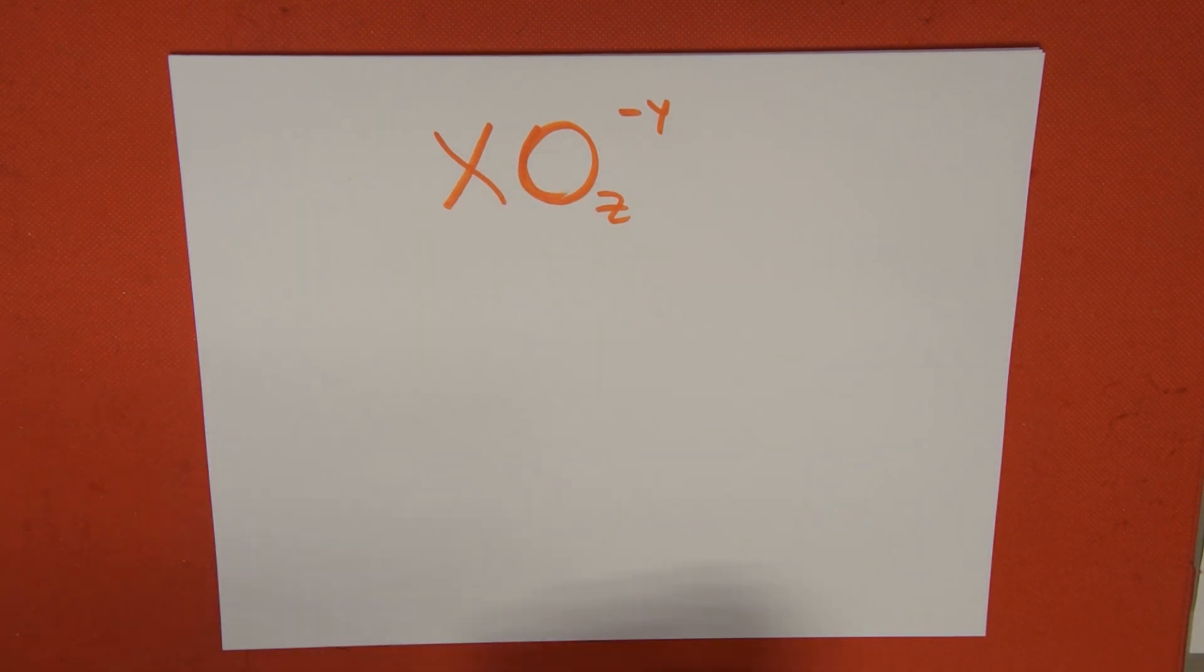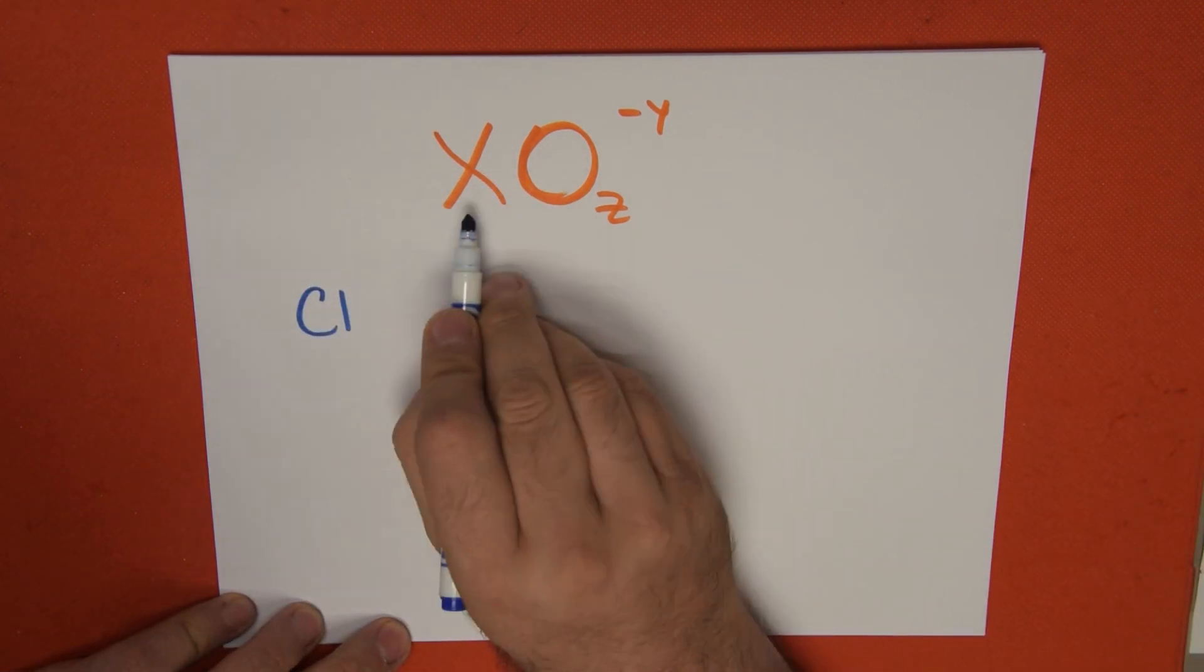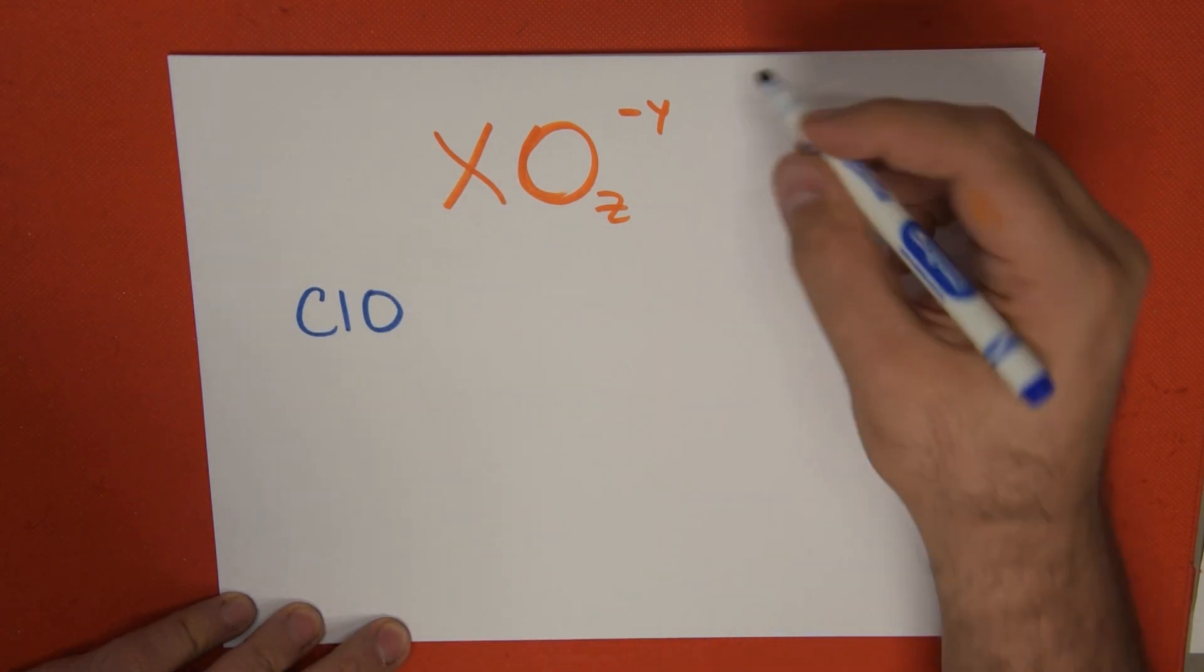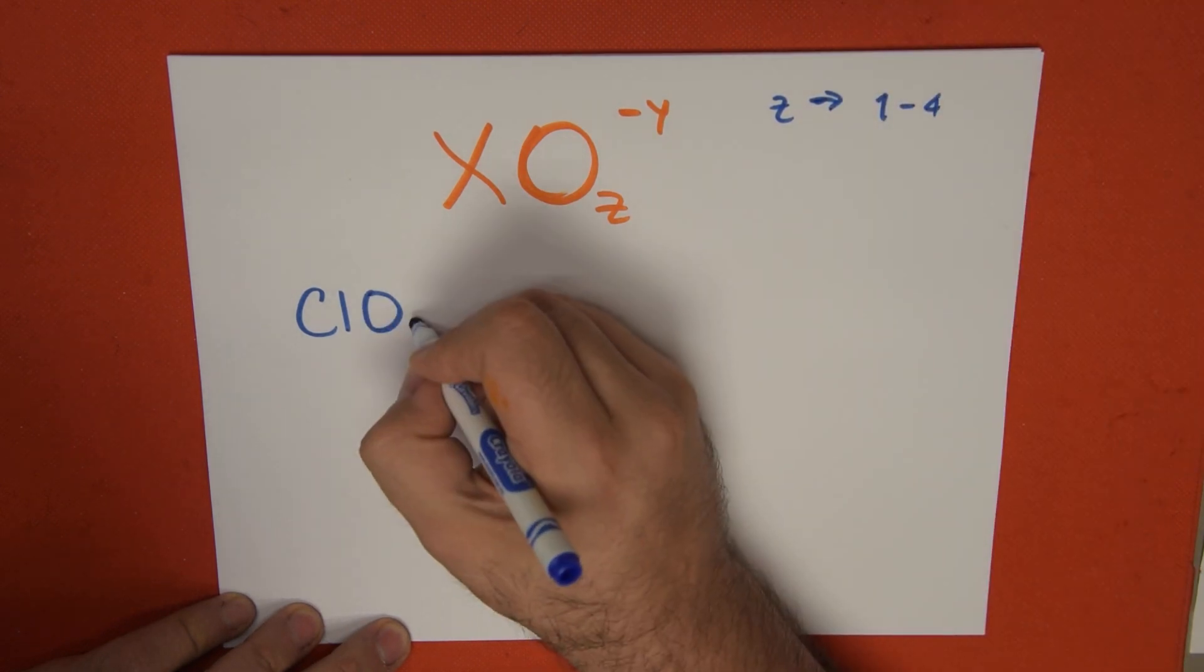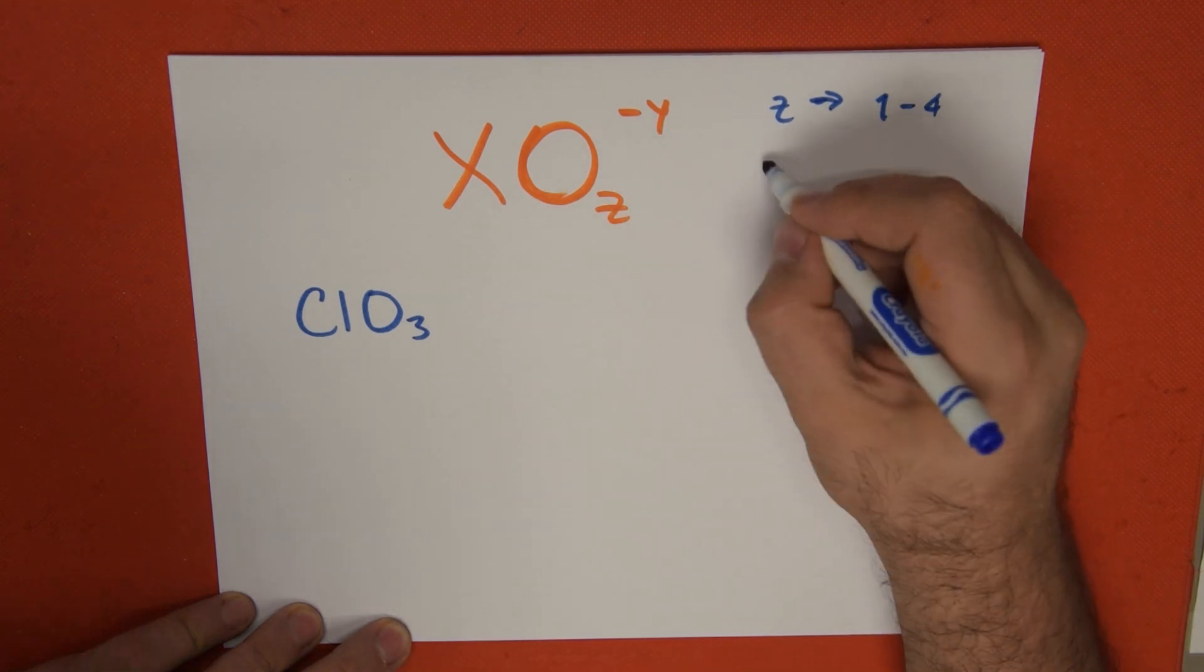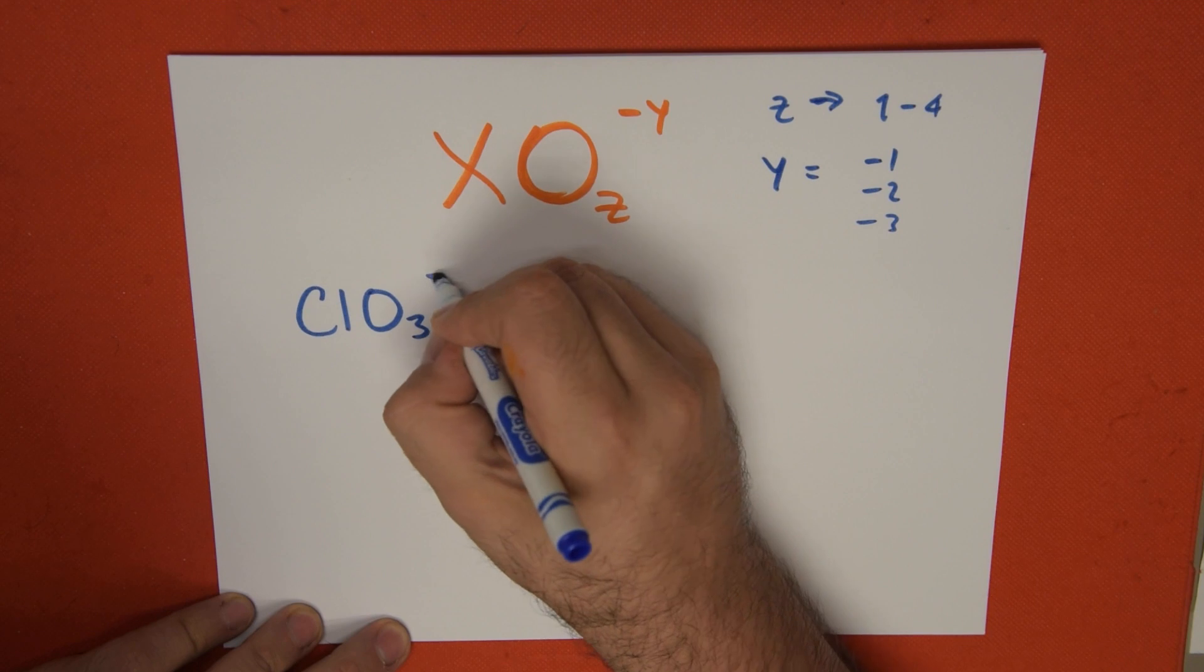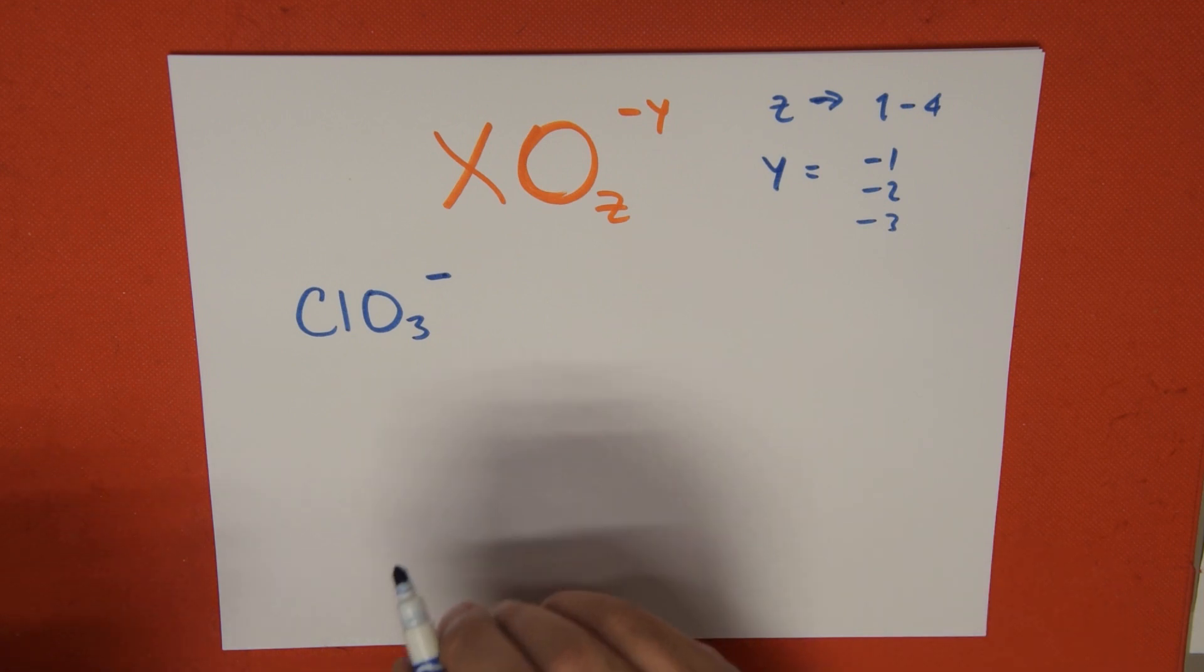Let's go into a very specific example. We can have something like chlorine, which is the X, then we have oxygen, and then Z can be 1 to 4. It has 3 oxygen atoms, and the charge Y is minus 1. How do I know this? Because I consulted a chart, an oxidation or valence chart, that gives me this information. So this is a specific example of an oxyanion.